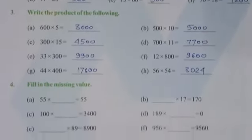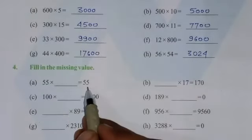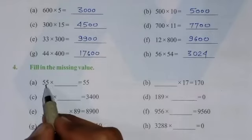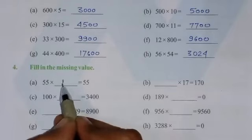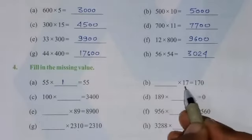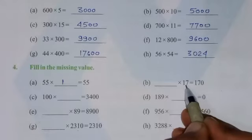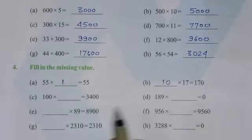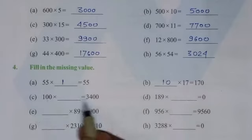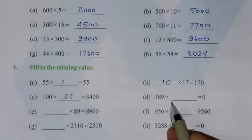Now see the next question number 4. And in this question, here is again 55, this side is also 55. As you all know, this number multiplied by 1, the answer will be the same number. Here, this side is 170, here is given 70, so 17, it means 10. Here is given 100, and this side is 3400, it means the number will be 34. Here is given 189, to multiply by what number to get 0 - of course, 0.